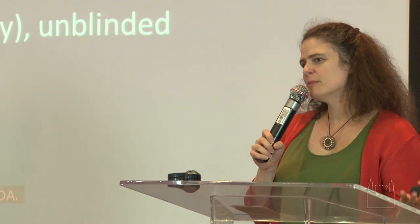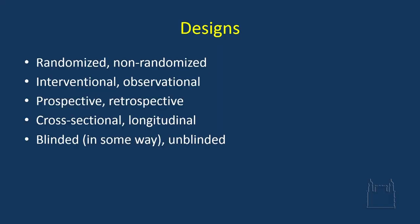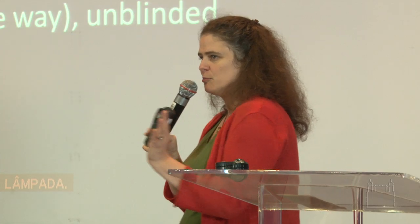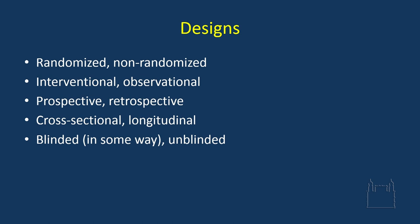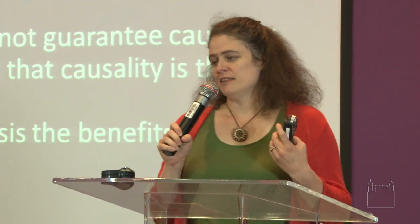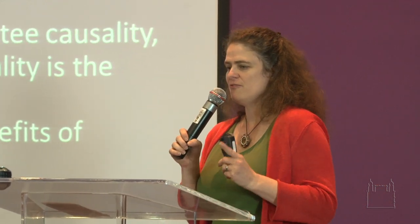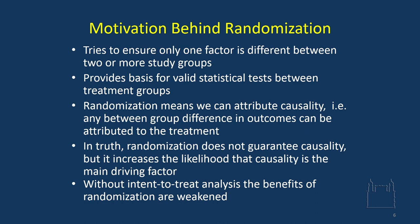So what are the designs? We talked about randomized and non-randomized designs — sometimes we have interventions and sometimes we're just observing. We talked about prospective, looking forward, and retrospective, looking at data already collected. Those cross-sectional surveys — snippets in time — and following people over a long period of time. We talked about blinded or masked studies and some issues that come up with unblinded studies, but also cases where you must have an unblinded study. We discussed motivations behind randomization: ensuring only one factor is different when comparing groups, testing one thing, providing a basis for valid statistical tests, and allowing us to attribute causality between group differences.